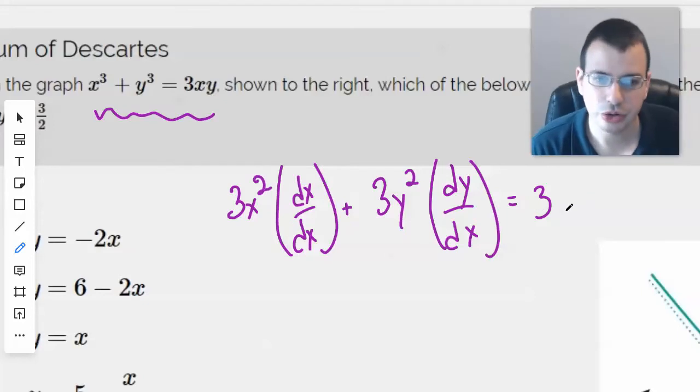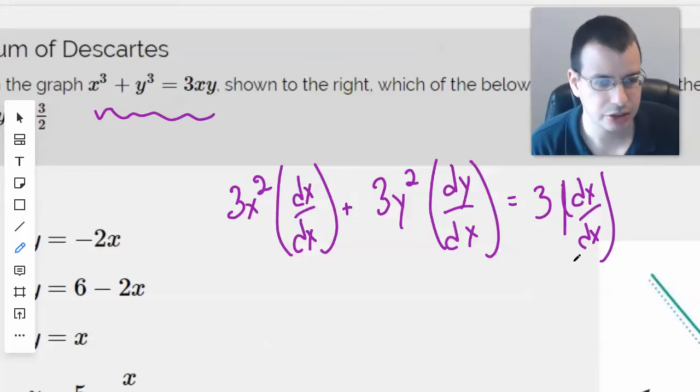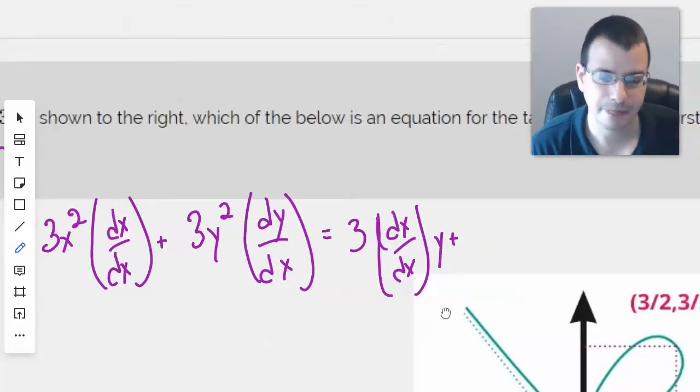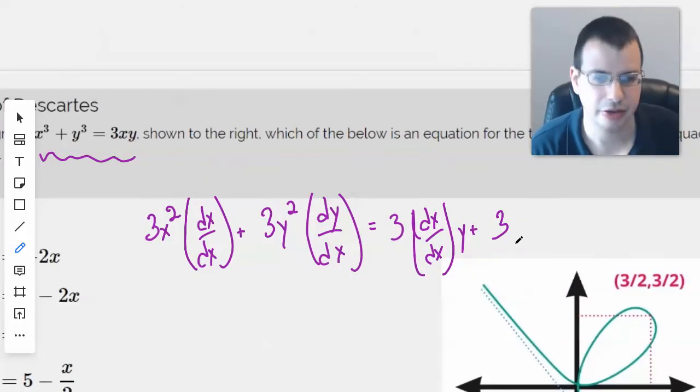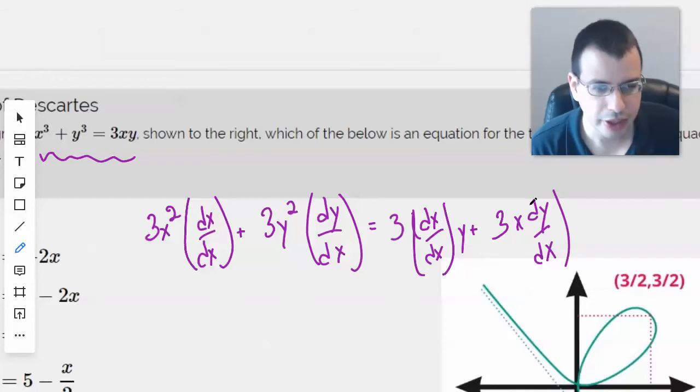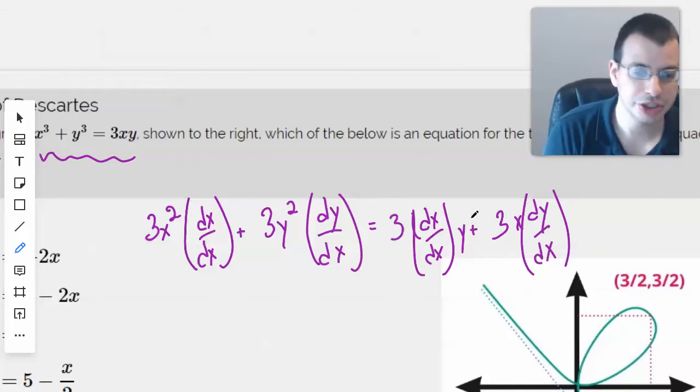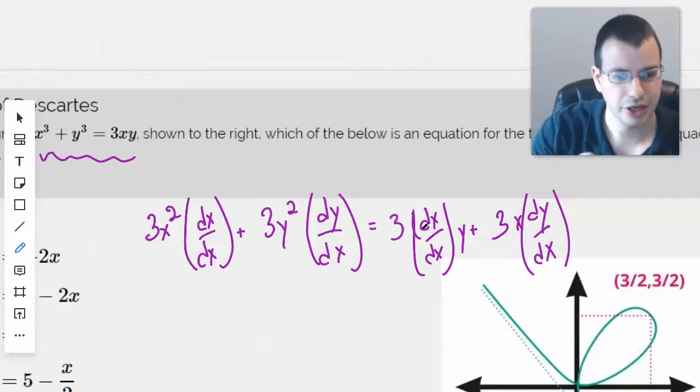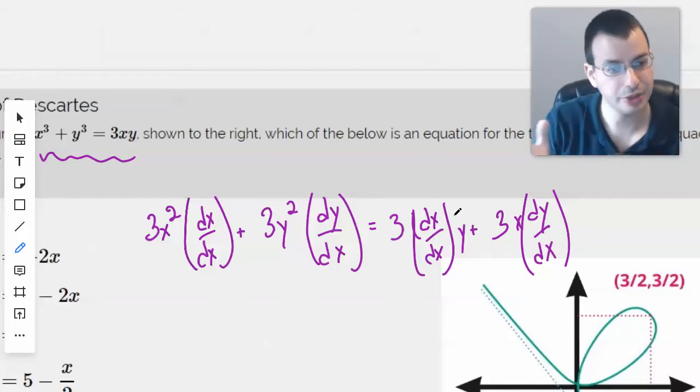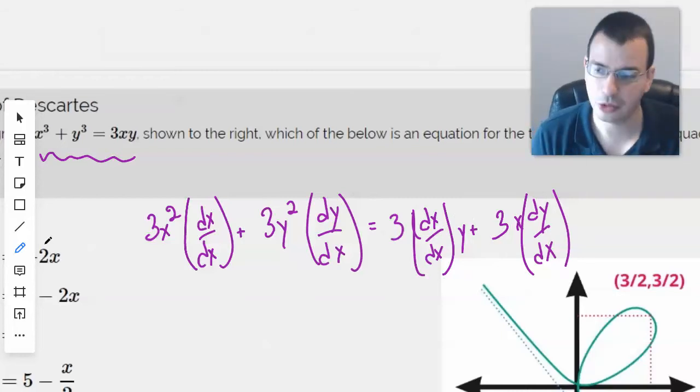And then here we'll use the product rule. So let's say 3 times derivative of x with respect to x times y plus 3. Look at it again, just kind of get an idea. x dy dx. And so what we did here was it's the product rule, but I kept the 3. You could have pulled the 3 out and put it back in, I just kind of left the 3 in this time.